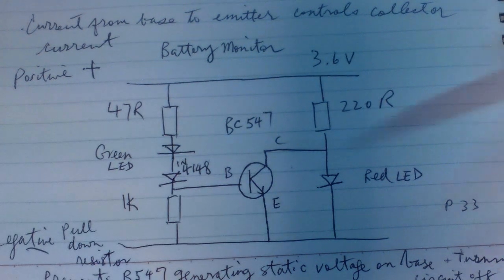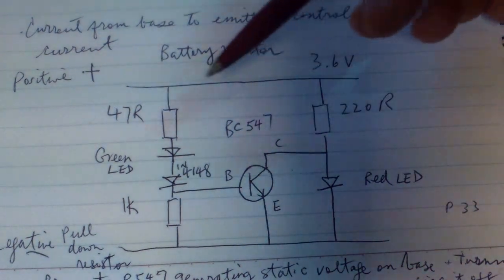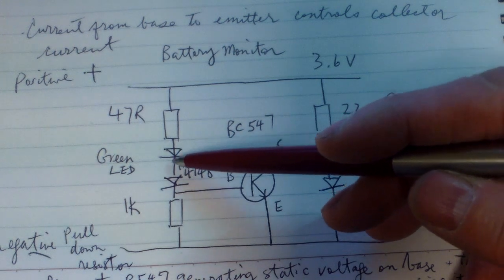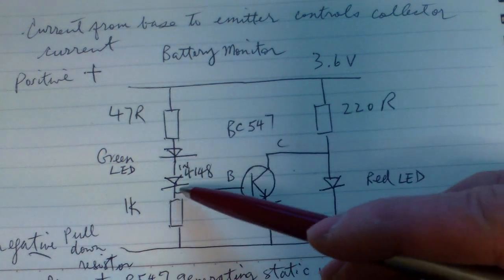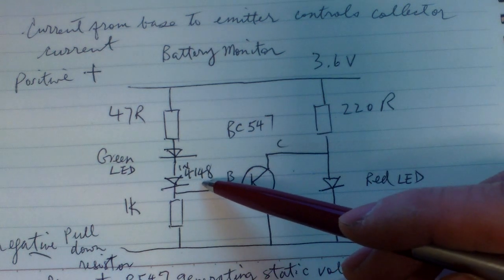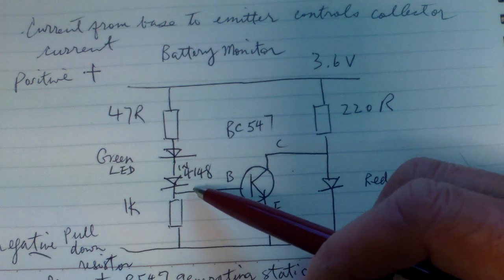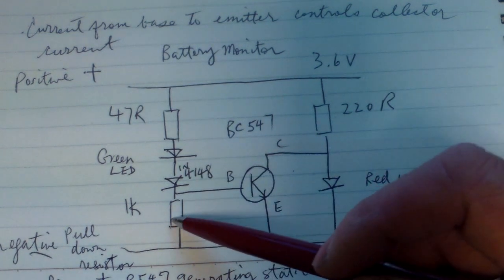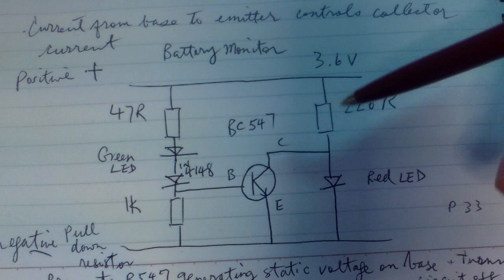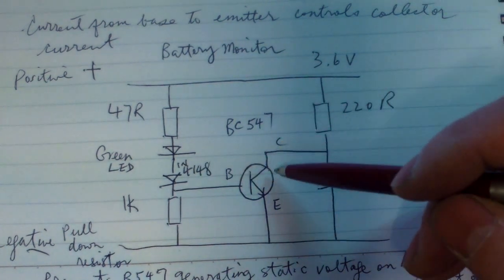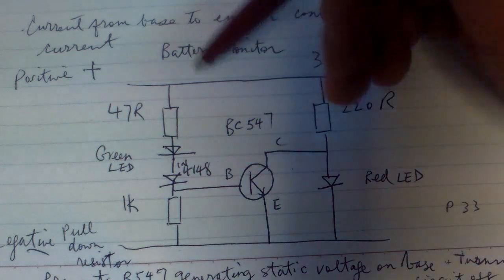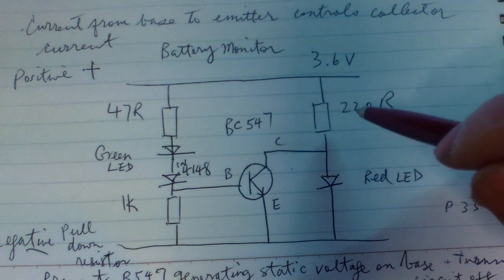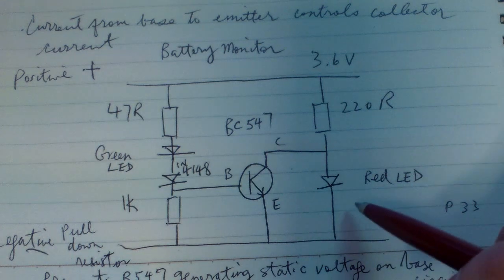This is the circuit down here. I think they call it a battery monitor and it uses a 47 ohm resistor here. It goes through a green LED and then through a 1N4148 diode. This is probably a low voltage drop diode and I don't have that so I'm going to use something else. Then goes through a 1K resistor to the negative rail and you have a BC547 here. Your positive rail is up here and you have another resistor here, 220 ohm, and then you have the red LED here.